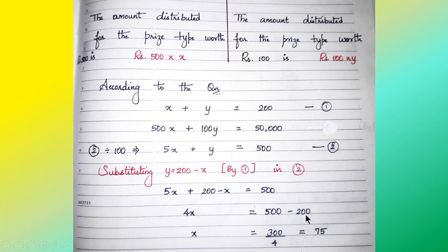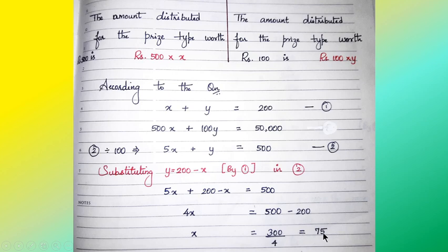500 minus 200 equals 300, so we have 4x equals 300. To find the value of x, when 4 goes to the right-hand side it becomes division, and 300 divided by 4 gives us 75. So we get the value of x equals 75.